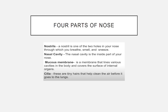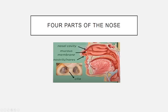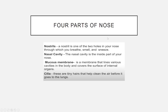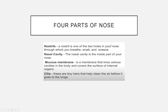The nostril is one of the two holes in your nose through which you breathe, smell, and sneeze. The nasal cavity is the inside part of your nose. The mucous membrane is the membrane that lines various cavities in the body and covers the surface of internal organs. Cilia are tiny hairs that help clean the air before it goes to the lungs.